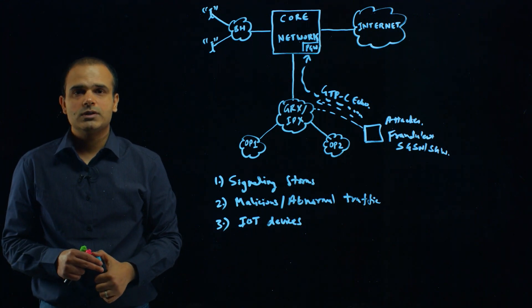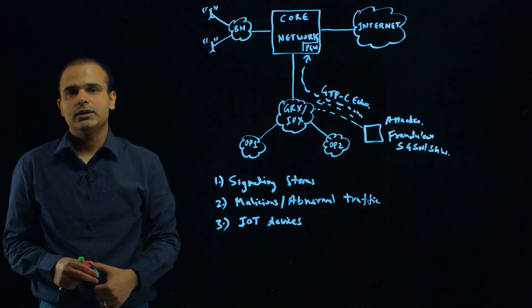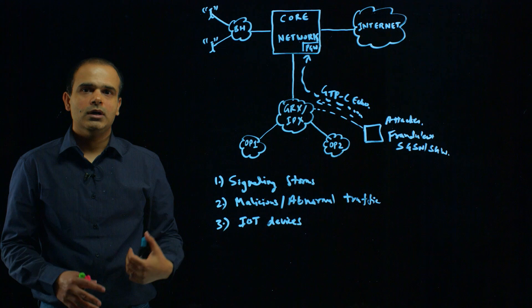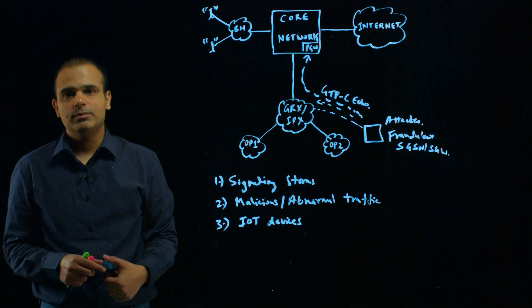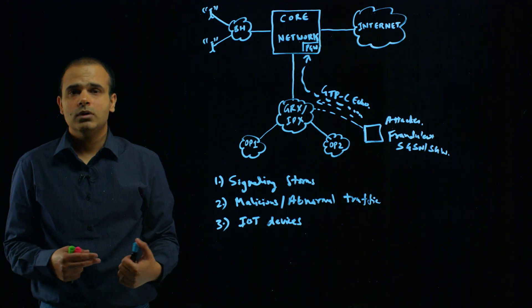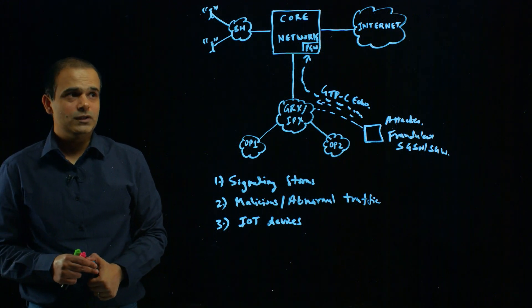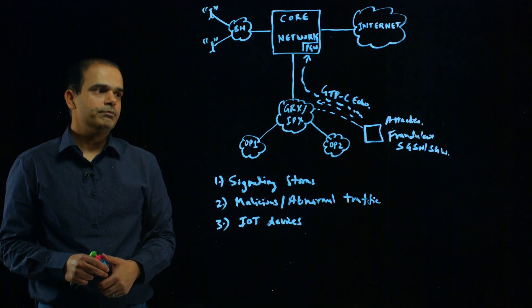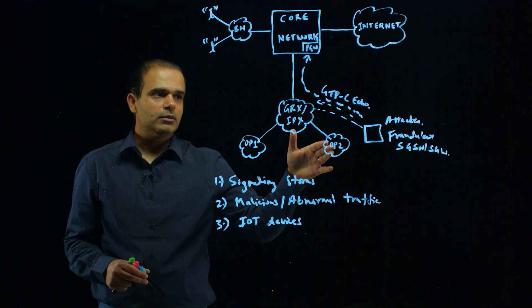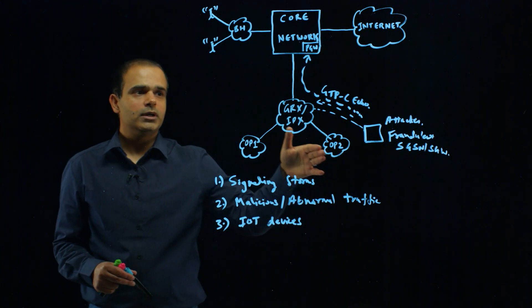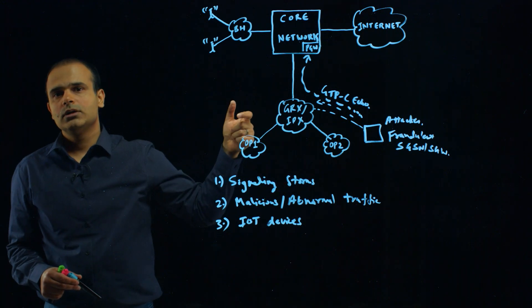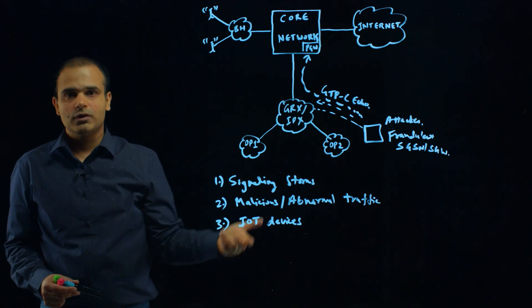There can be instances where, for example, the GTP module of your packet gateway is going to have process-related issues or any other type of overflow or software issues. It's really a very concerning attack where an attacker having access to the IPX GRX network can affect the availability and service of your network.